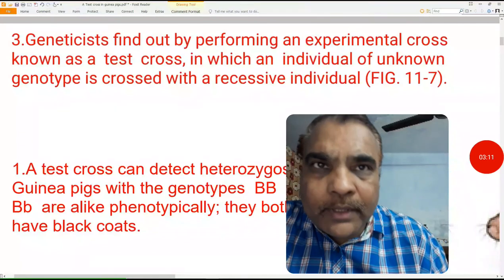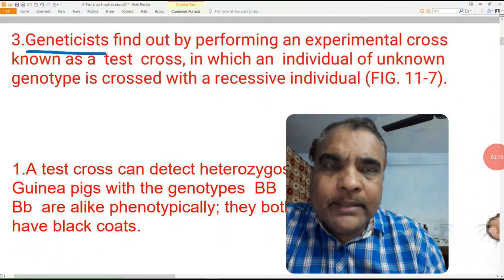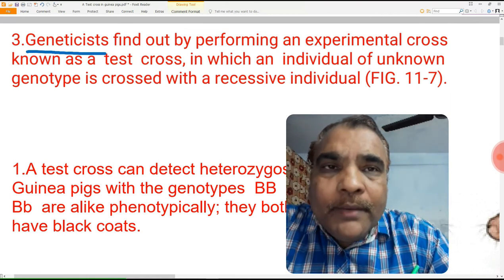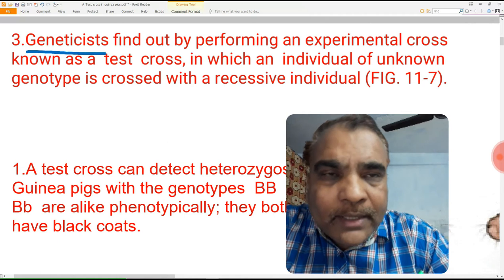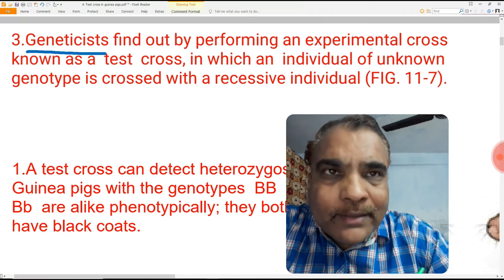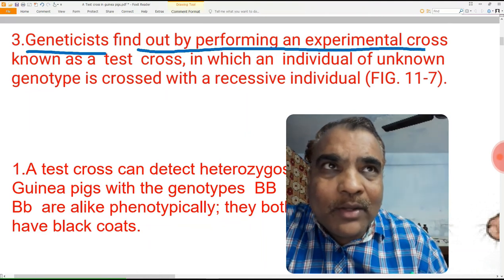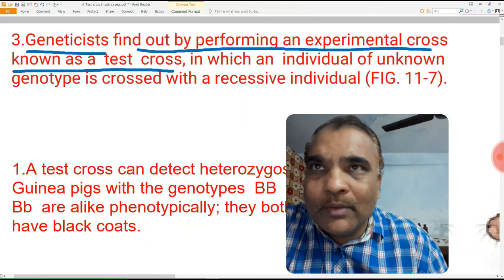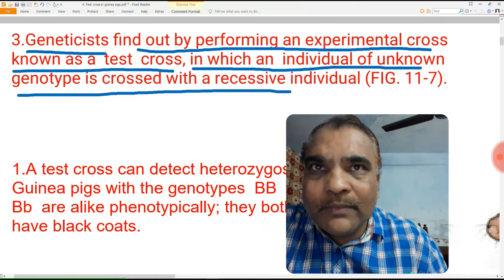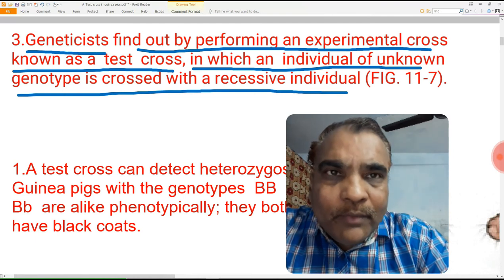Geneticists — the scientists or researchers performing research in the field of genetics — find out by performing an experimental cross known as a test cross, in which an individual of unknown genotype is crossed with a recessive individual.